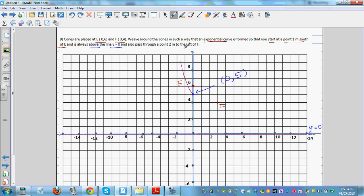And you also pass through a point 2 meters to the left of F. So 2 meters to the left of F. So this is right and, yeah, so this is this point to the left. The coordinate of this point is 1,4. So the graph, the sketch of the graph would look like this. It goes like this.